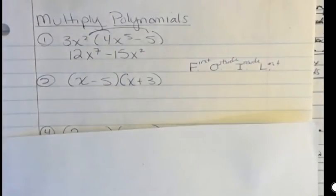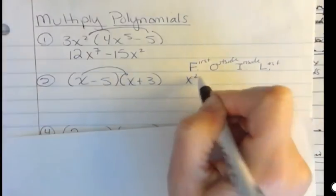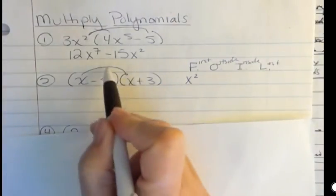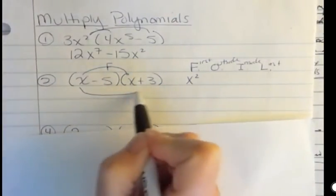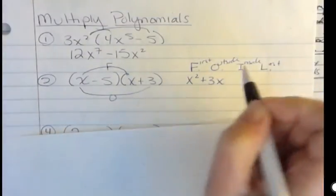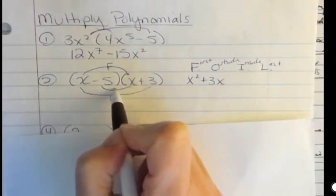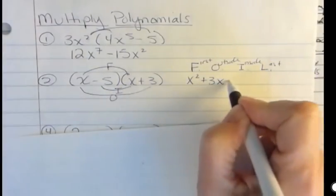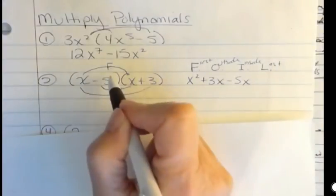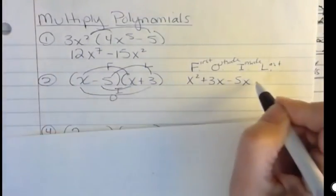First, I have my firsts are x times x. That's going to be x squared. My outside is x times 3, that's going to be 3x. And I'm aware of the signs as I go. My inside, negative 5 times x, that's negative 5x. And my last are negative 5 times 3, which is negative 15.